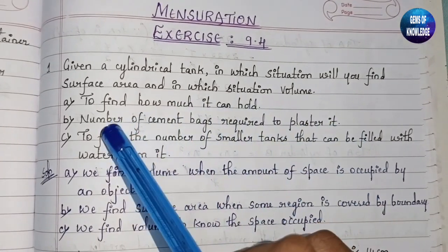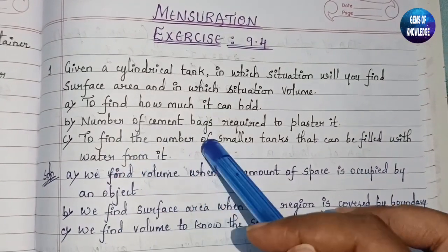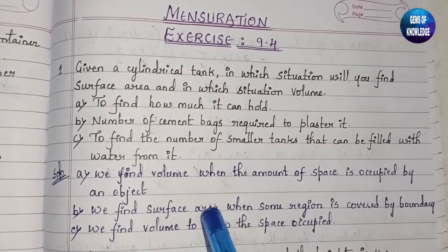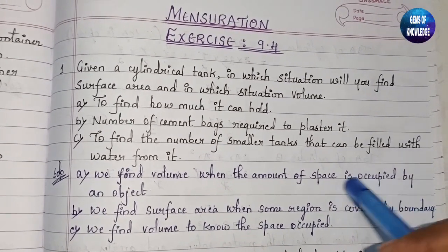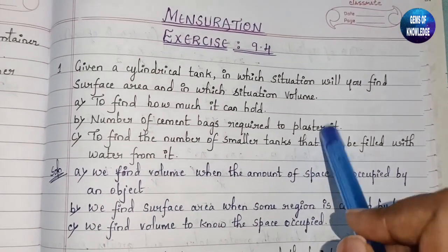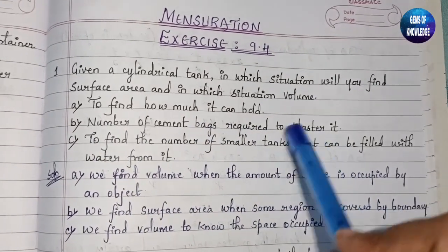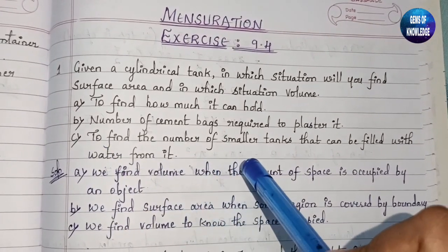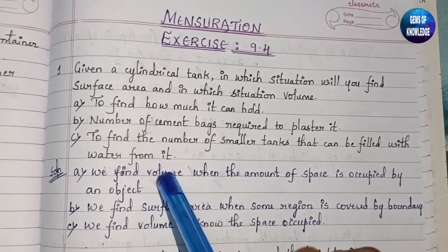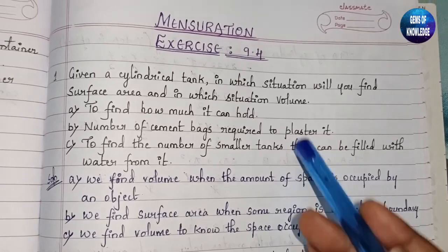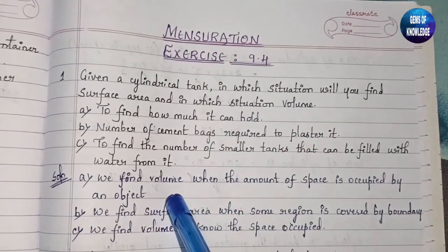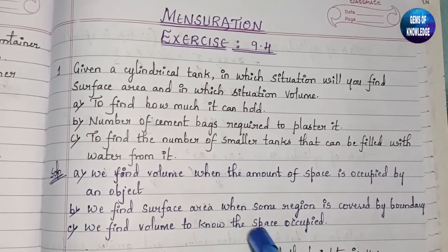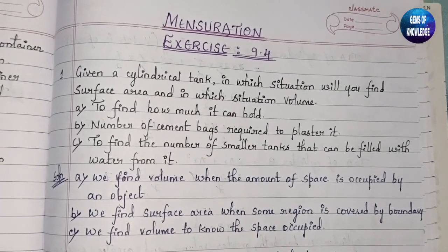The second case asks the number of cement bags required to plaster the tank. Plastering means covering some area, so here we find the surface area — we find surface area when a region is covered by a boundary. The third case asks how many smaller tanks can be filled from a bigger tank. Transferring water involves filling capacity, so we find the volume again.